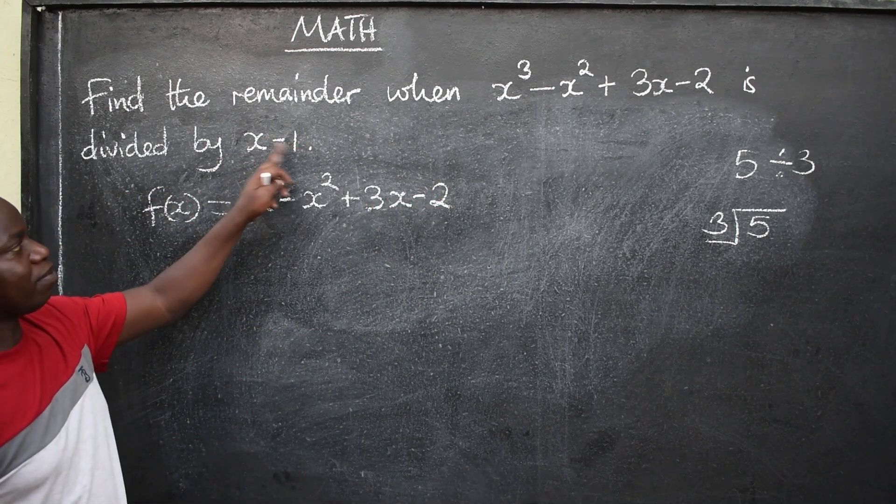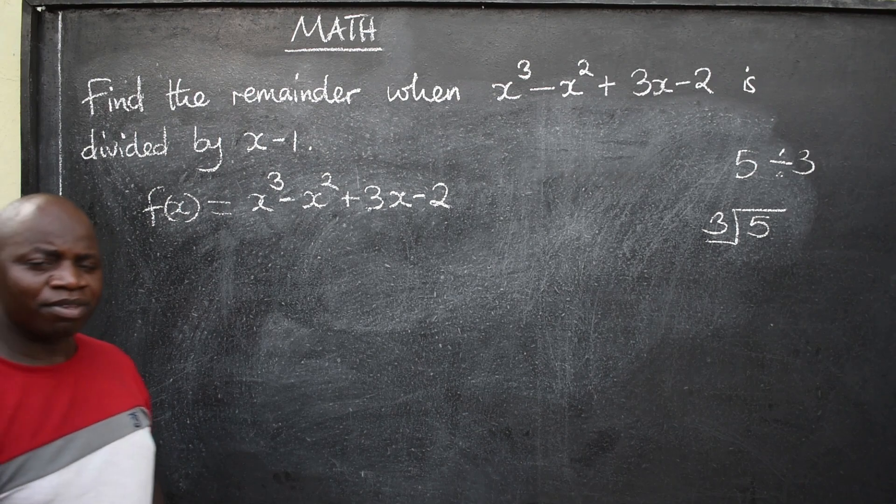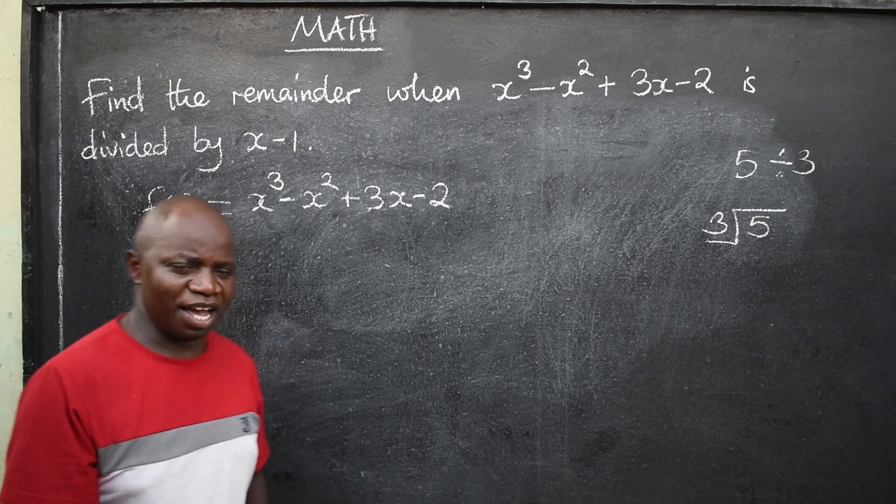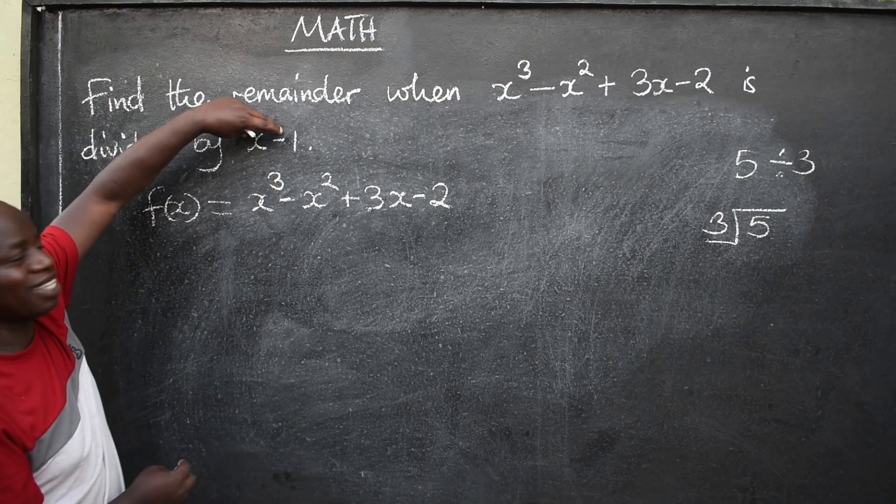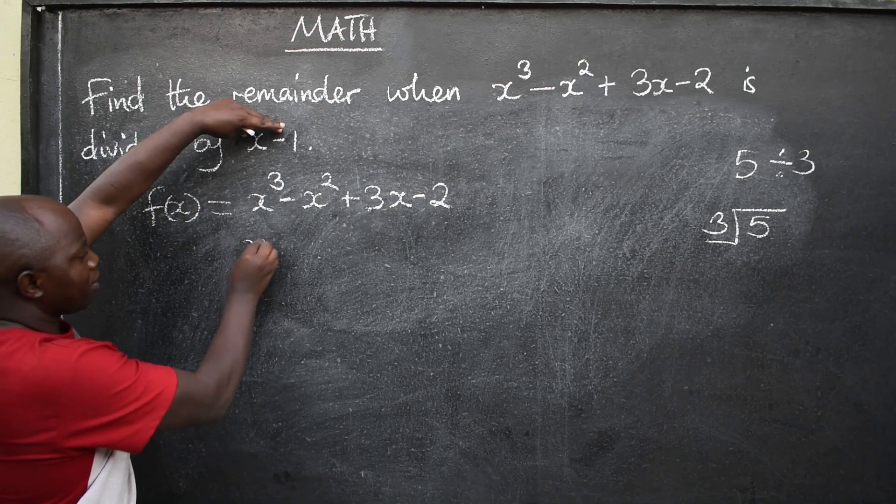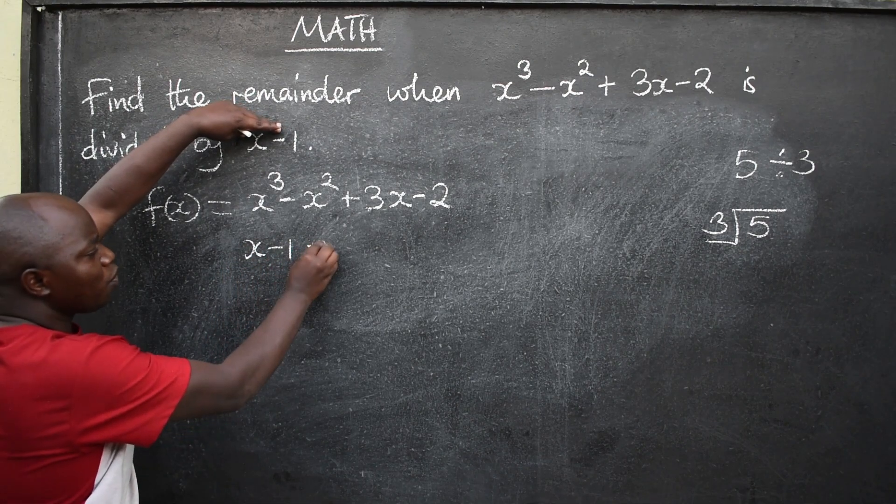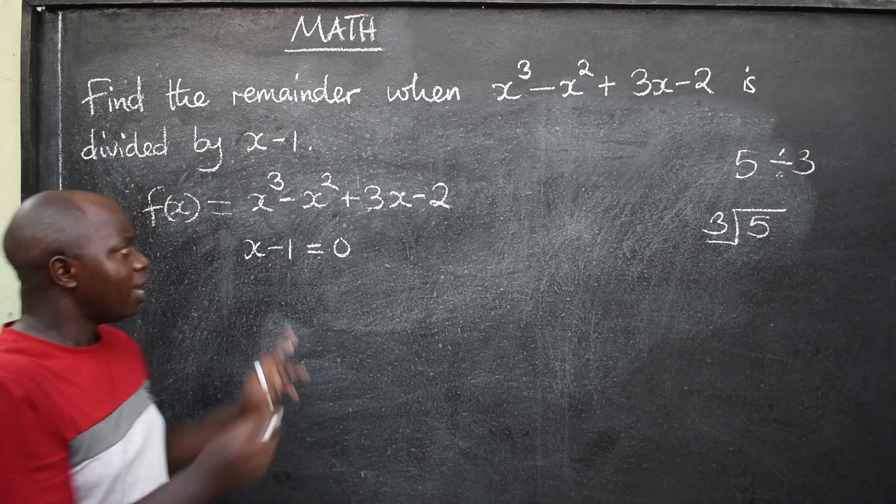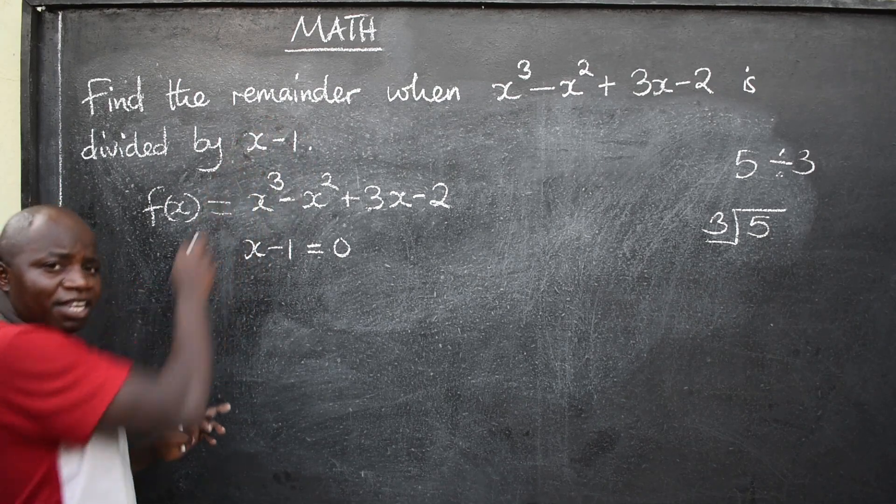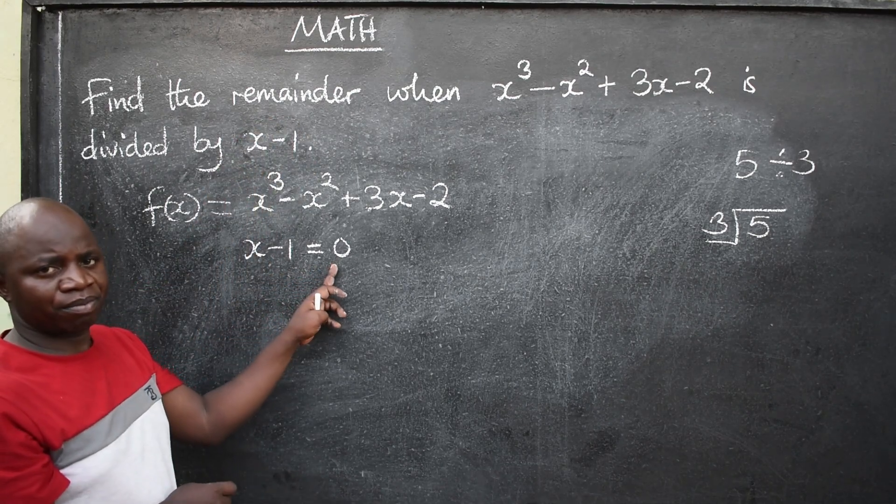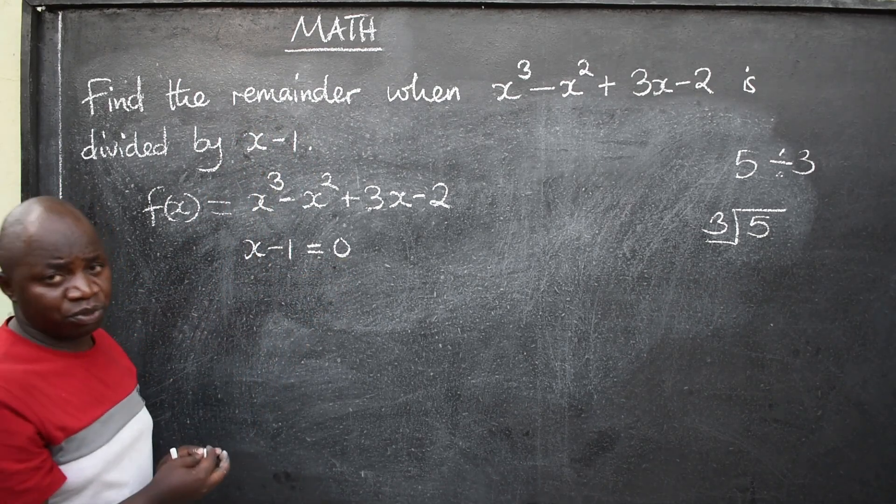What we are dividing is x minus 1. Now, for you to get the remainder, you are going to get this x minus 1, equate it to 0, always. Whatever you have been given here, equate it to 0.